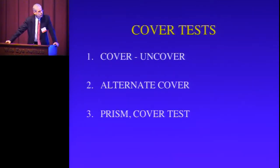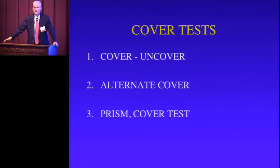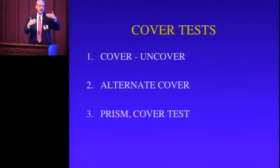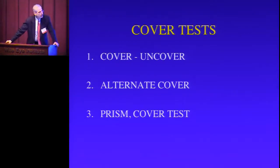The third way we measure strabismus is the cover test, which requires two things: a fairly cooperative patient, and reasonably good vision in each eye. If one eye has very poor vision — such as amblyopia — and the left eye is turning in, covering the right eye may not cause the left eye to move straight ahead, because it just doesn't move due to poor vision. So you need reasonably good vision in each eye and a fairly cooperative patient to use the cover test properly.